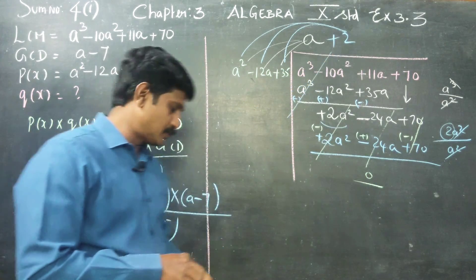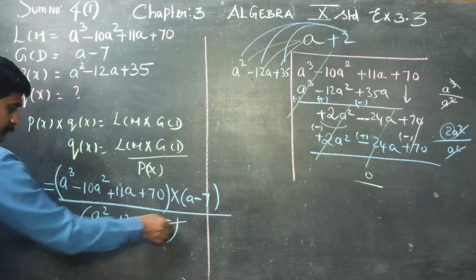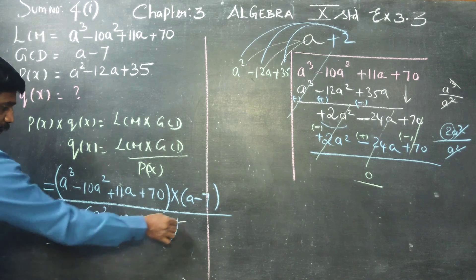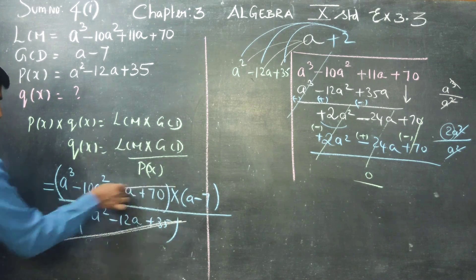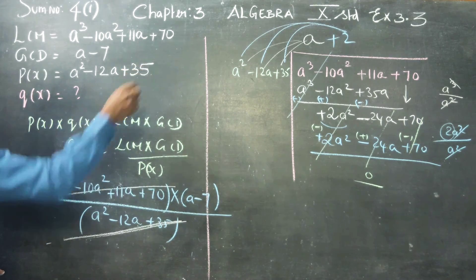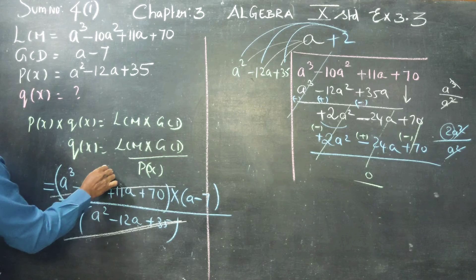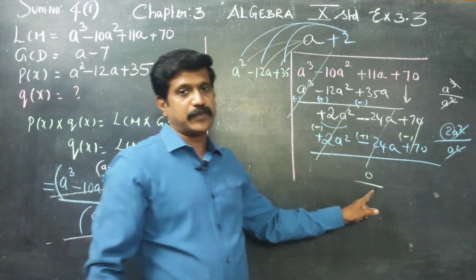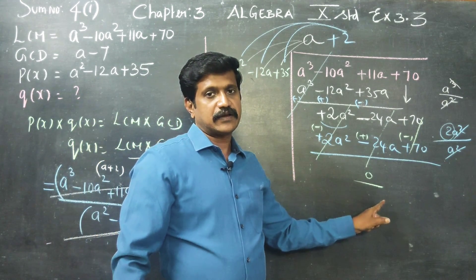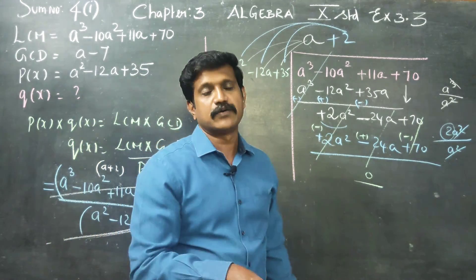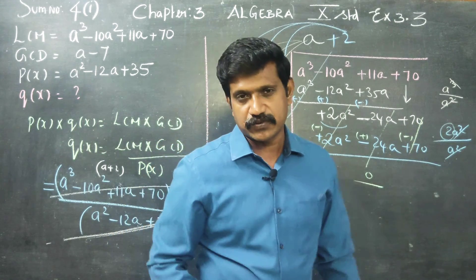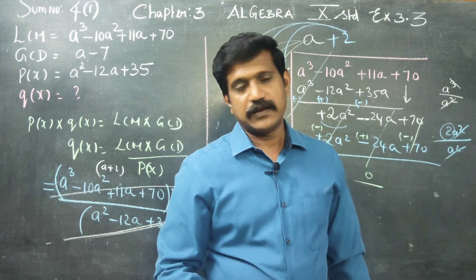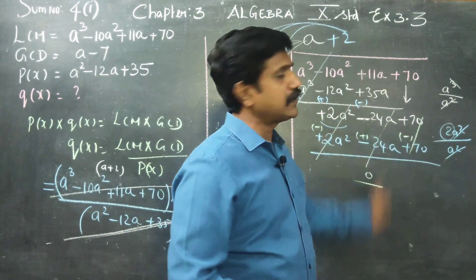The quotient is A plus 2. This sum divides that sum. The quotient portion is A plus 2, and the remainder is zero. Cancel, cancel — there may be a printing mistake in the sum but the division is correct.